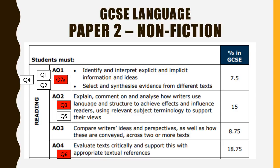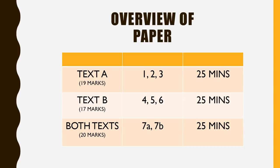Question seven A and seven B together are worth 20 marks. Seven B is our AO3 question, which is our comparison question, worth 14 marks. Just an overview of the paper and the timings.